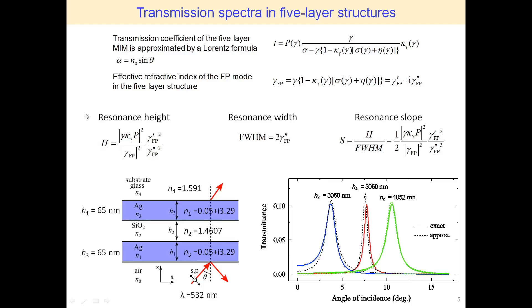Based on the Lorentz representation, the full width at half maximum can be extracted as this expression, and the height can be represented as this analytical expression. The resonance slope can be expressed as follows.